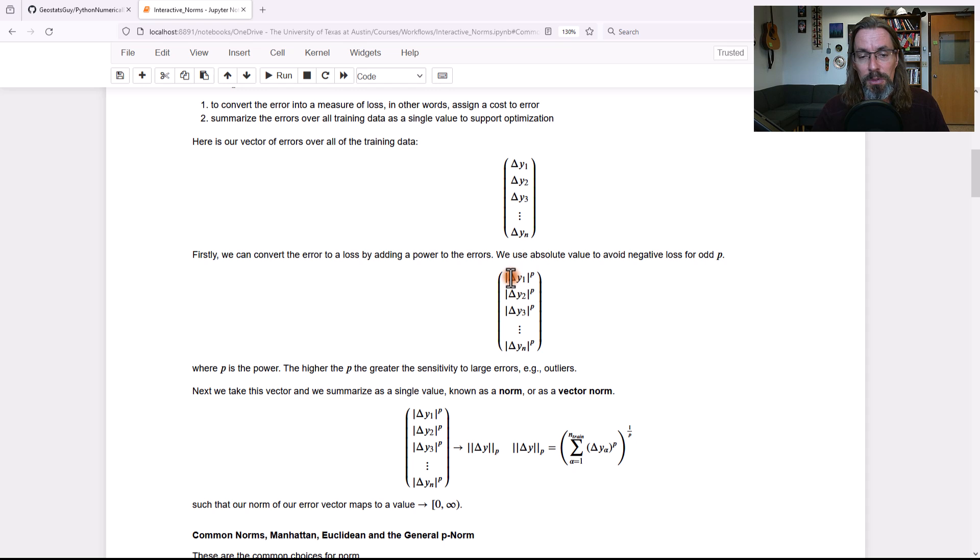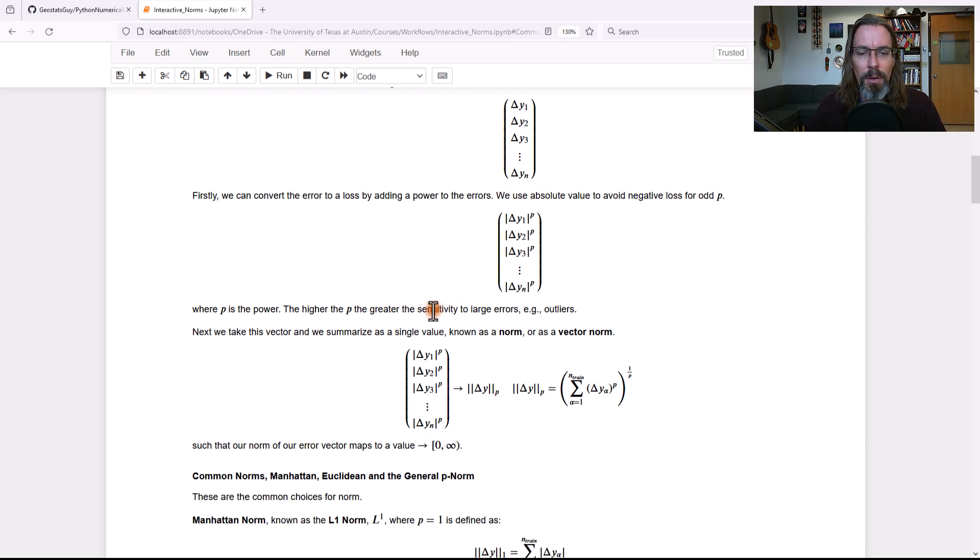Now what we're going to do is we'll take those absolute values and we'll raise them to p. And p is going to be our converting or mapping from error to loss. Okay, so far we've got the first thing done. We've gone from error to loss.